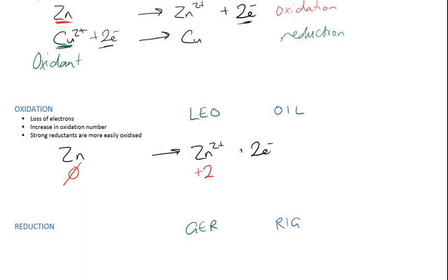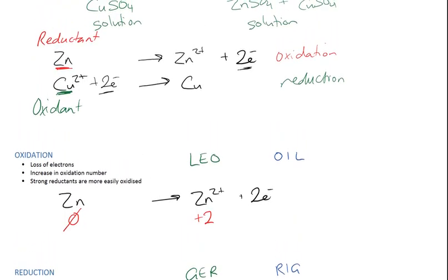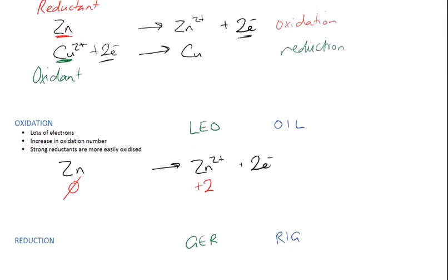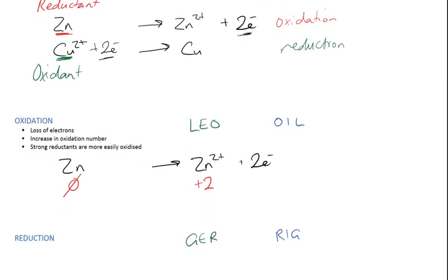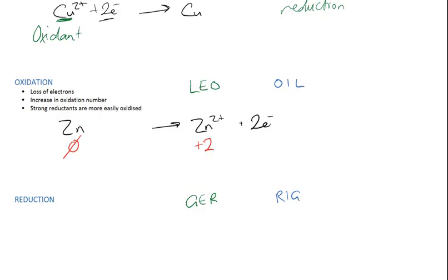Zinc is also something that we call a strong reductant. It's easily oxidized. So in the reaction above, we see that it was a reductant as written in red there. So it must be a stronger reductant than copper is, because that reaction was what we call spontaneous. It actually happened. So in this case here, zinc is going to be a reductant because it's being oxidized.